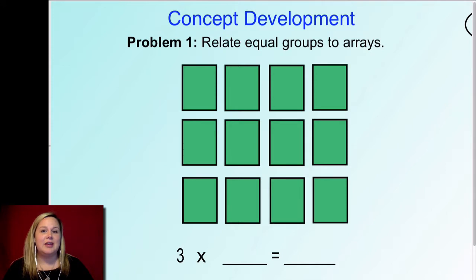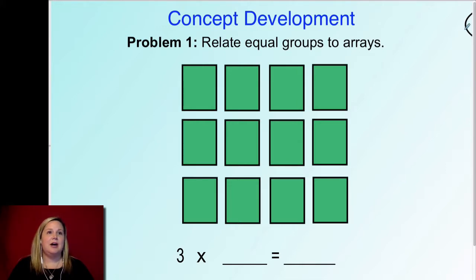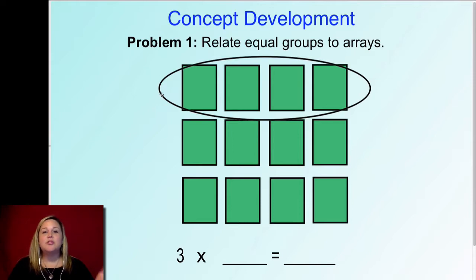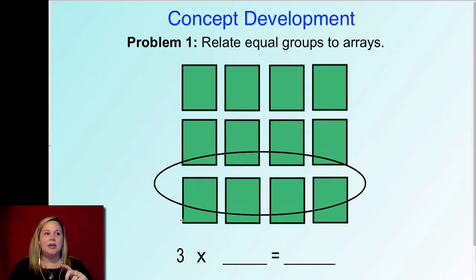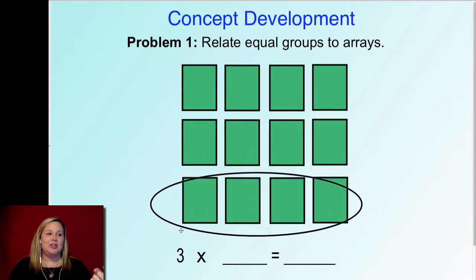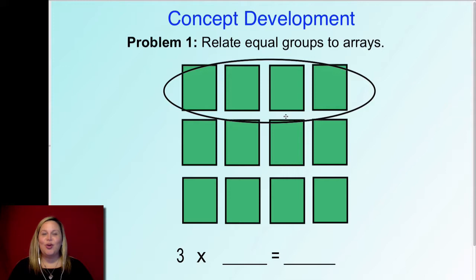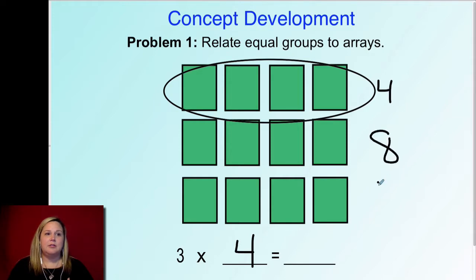Let's look at another example. I want you to notice how many rectangles are in the top row — just this top row right here. Four — you're right. So the size of one row is four, and this can also be called a group. Here's one group of four, here's another group of four, and here's another group of four. So why did I write three times blank equals blank? Because there are three rows — remember, the first number is how many groups or rows, and the second is how many are in each row: four. So three times four.